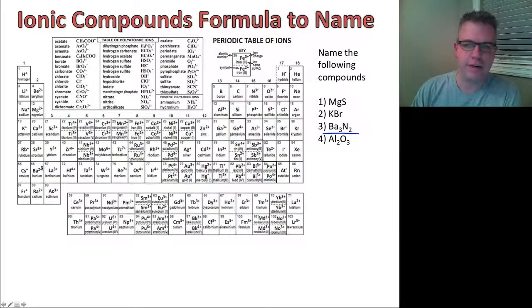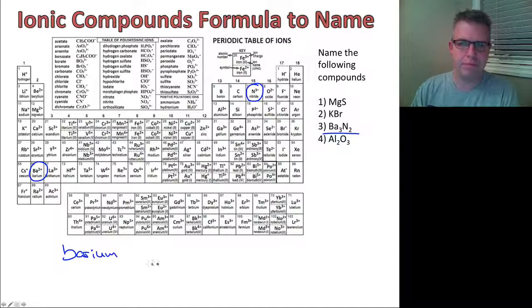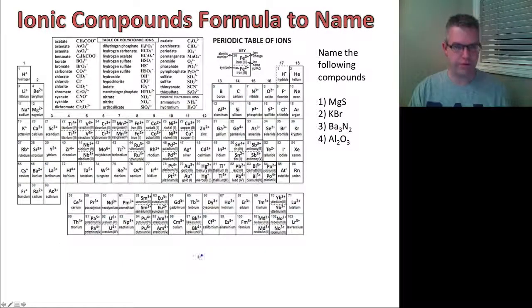Let's find here, we have Ba is barium. And we're going to find nitride, or nitrogen. So then we just write this down. Barium nitride. Very simple.